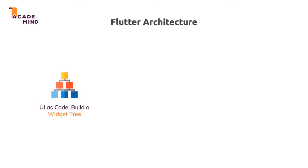That's called UI as code. You build a widget tree in your Flutter apps. The idea is that you will have no visual drag-and-drop editor for adding buttons or text inputs to your screens. Instead, you'll work only in code, and whilst this might sound intimidating at first, you will see that Flutter has a really nice approach for that, which makes creating interfaces with this UI as code approach a breeze.